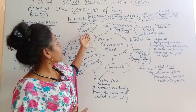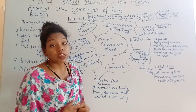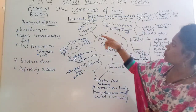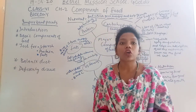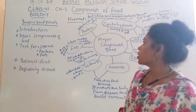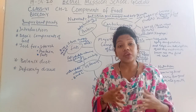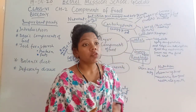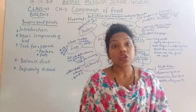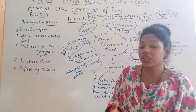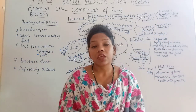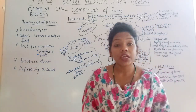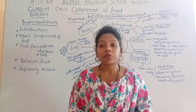Another component is protein, also called body-building food. This protein is very necessary for everybody, mainly for growing children like students. We need a lot of proteins. Protein can be found — for vegetarians, you can eat pulses and milk. These are the main ingredients from where we get protein.